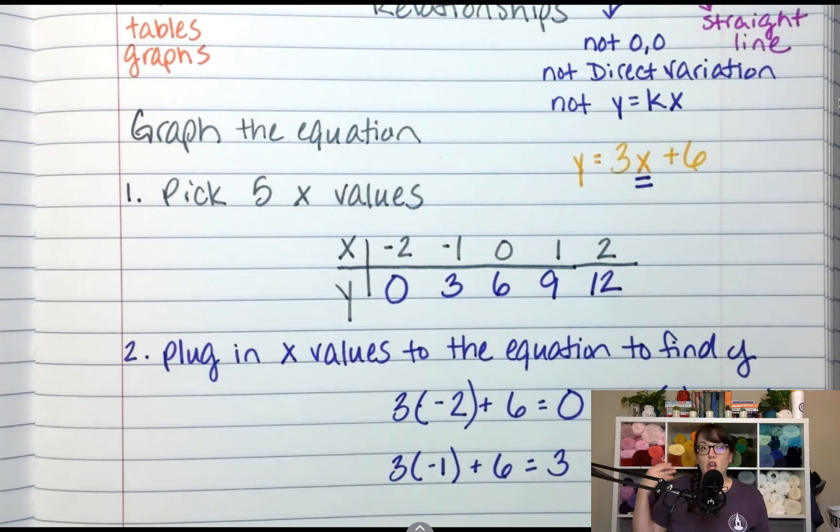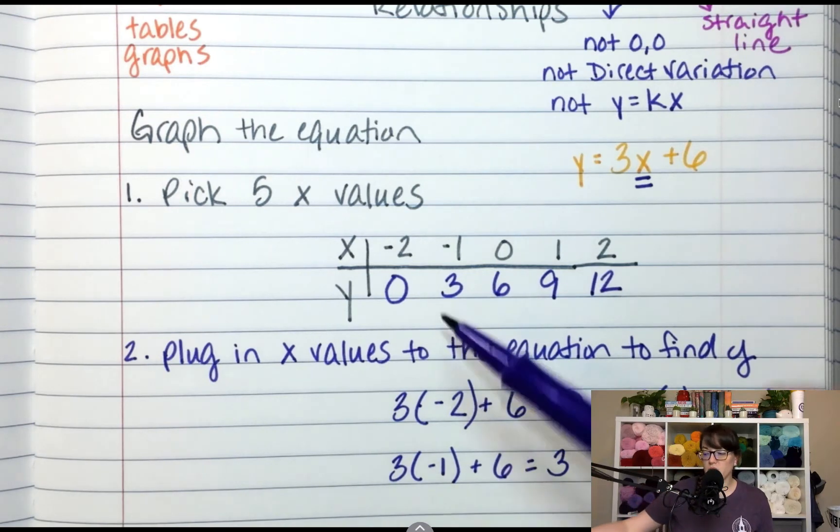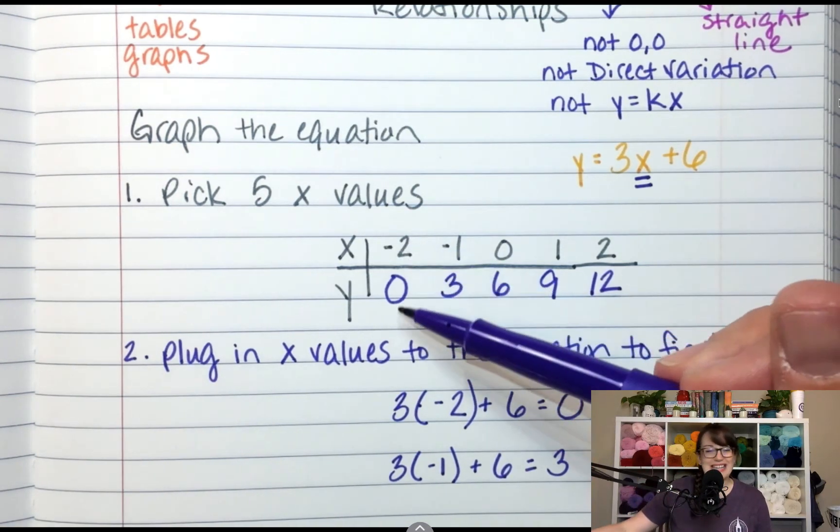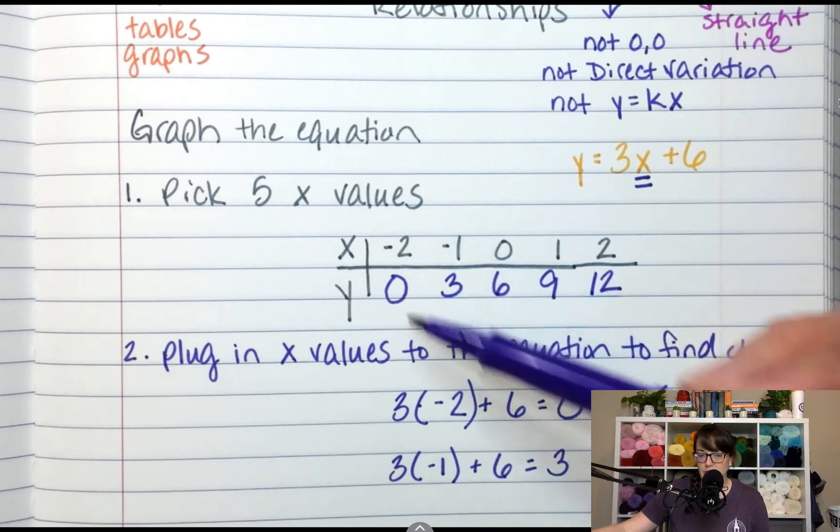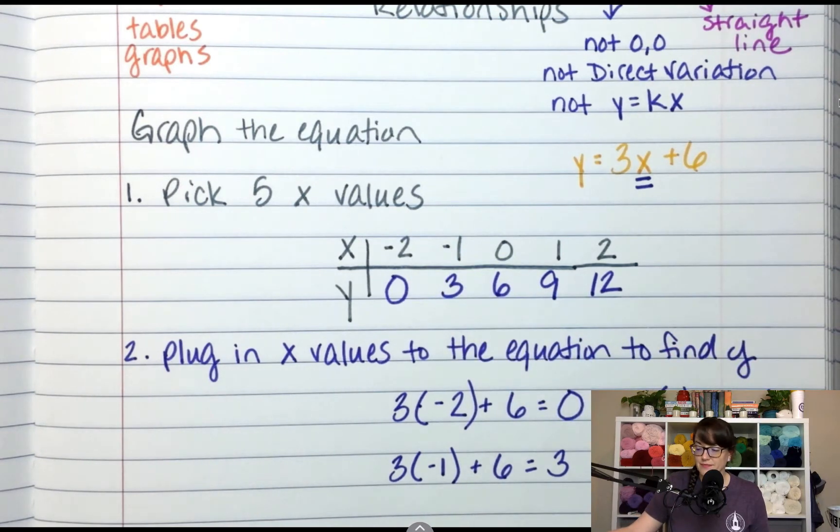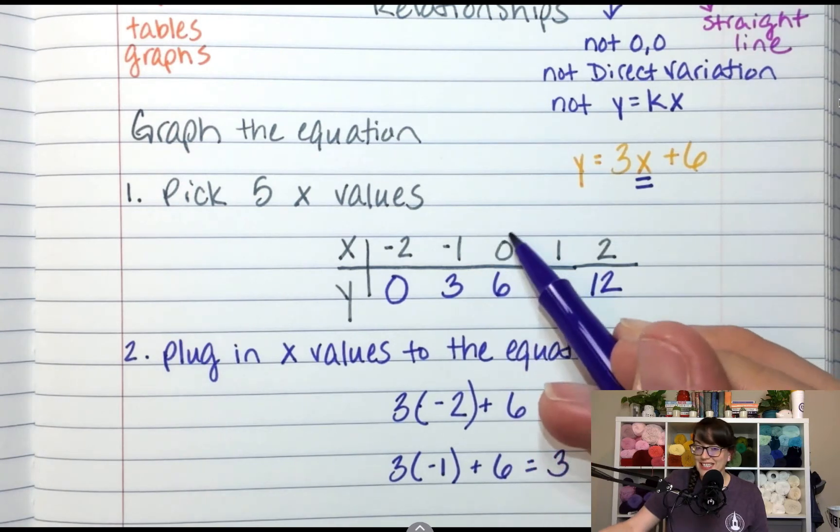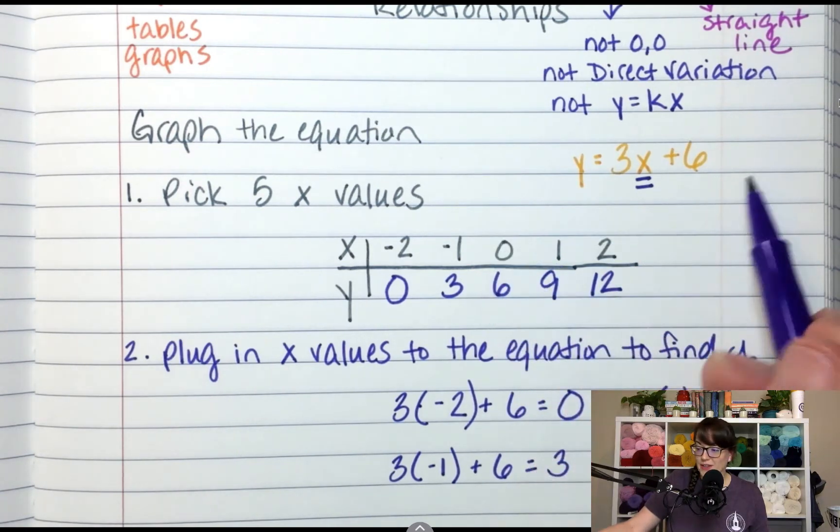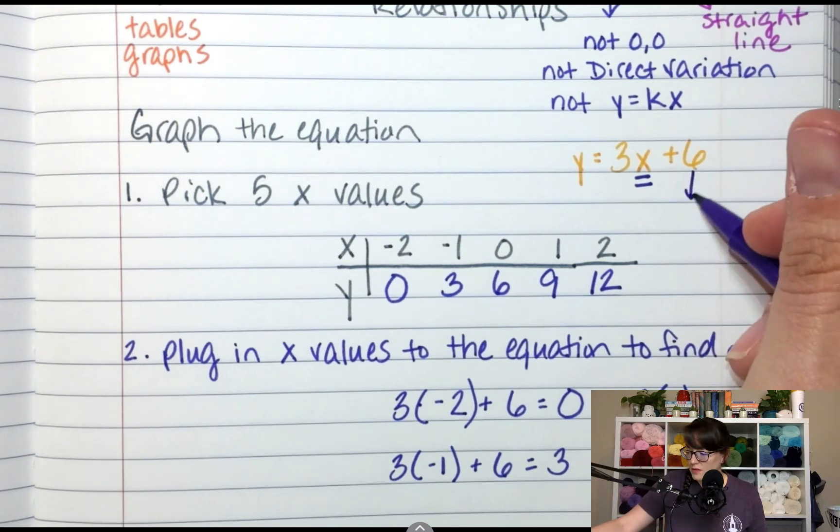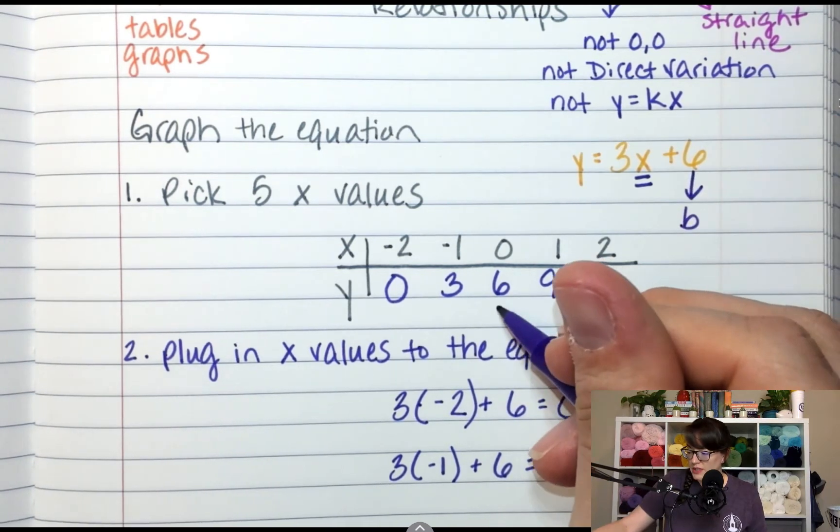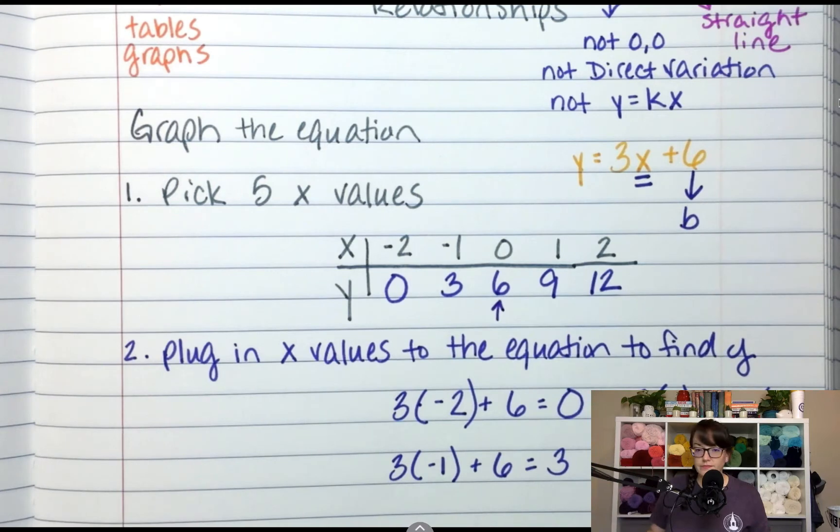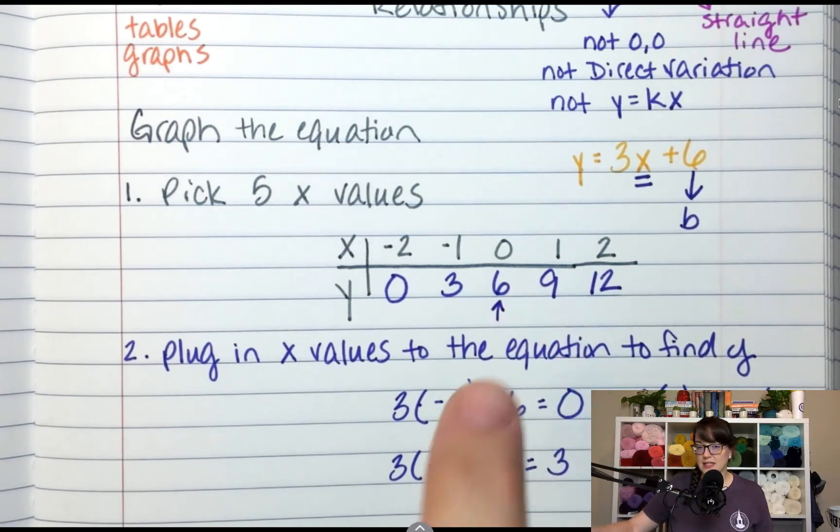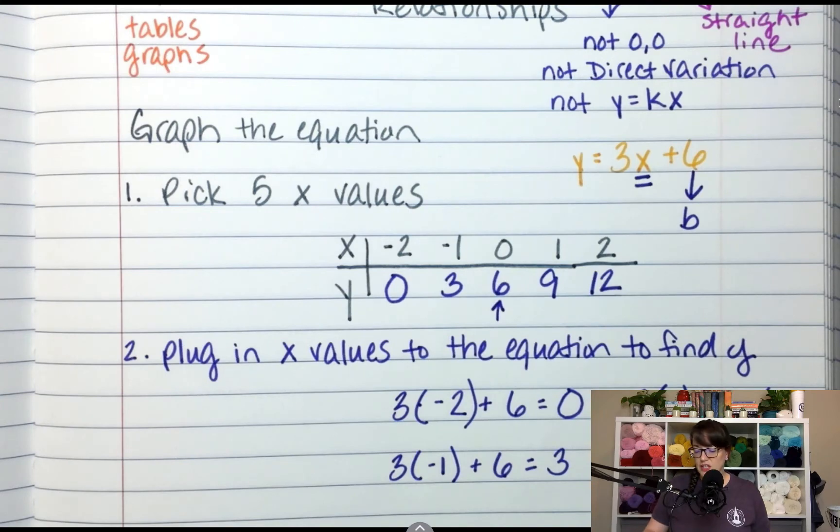Now, remember we're talking about non-proportional. So our coordinate is not 0, 0. No. And we know from our previous lessons that this is the y-intercept. So this was B, which is here. Because when x is 0, that's where it crosses the y-axis. Now let's look at graphing.